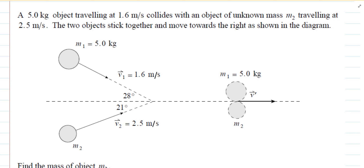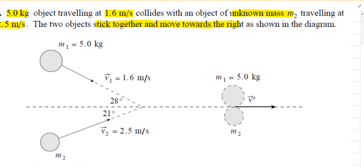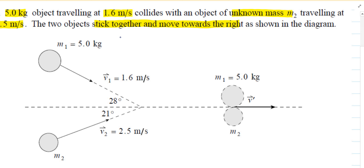Here is another collision question involving angles. For this problem we have a 5 kilogram object traveling at 1.6 meters per second and it collides with another object with unknown mass, traveling at 2.5 meters per second. The two objects then stick together and move towards the right as shown in the diagram. Let's take a look at the before and after cases.